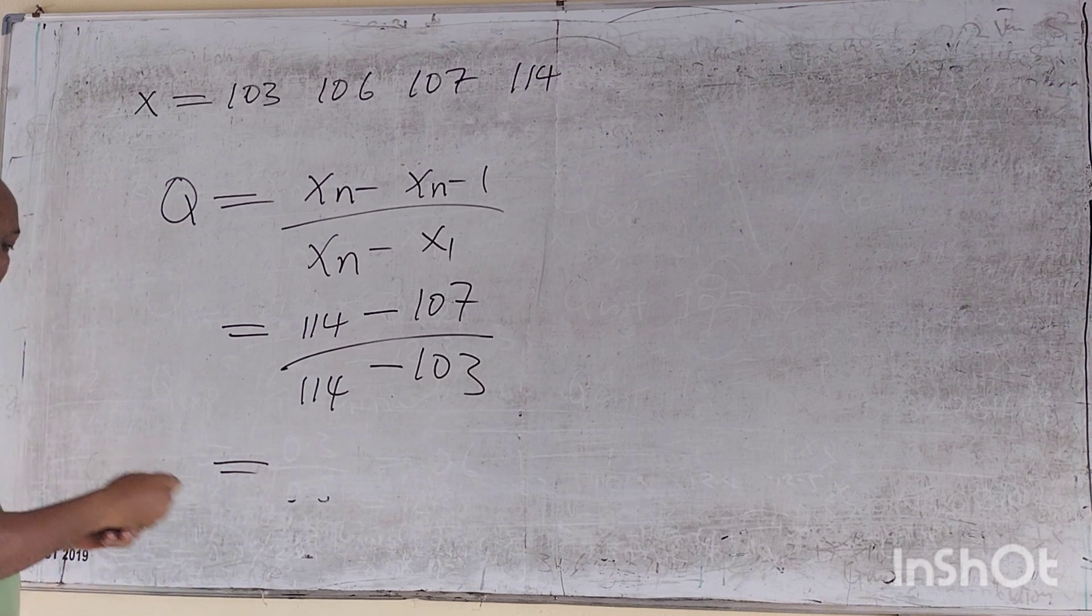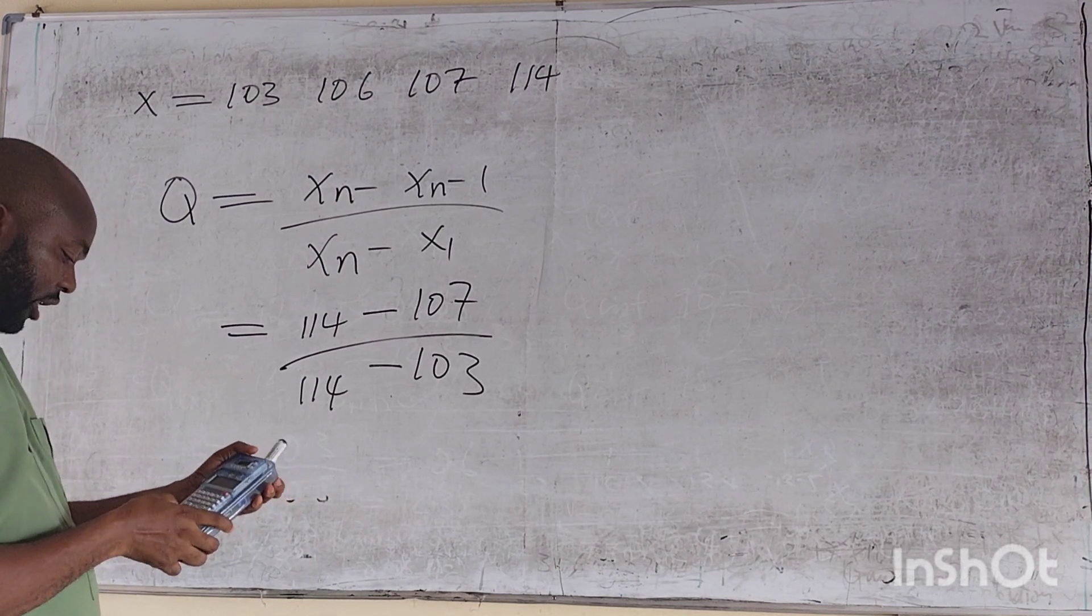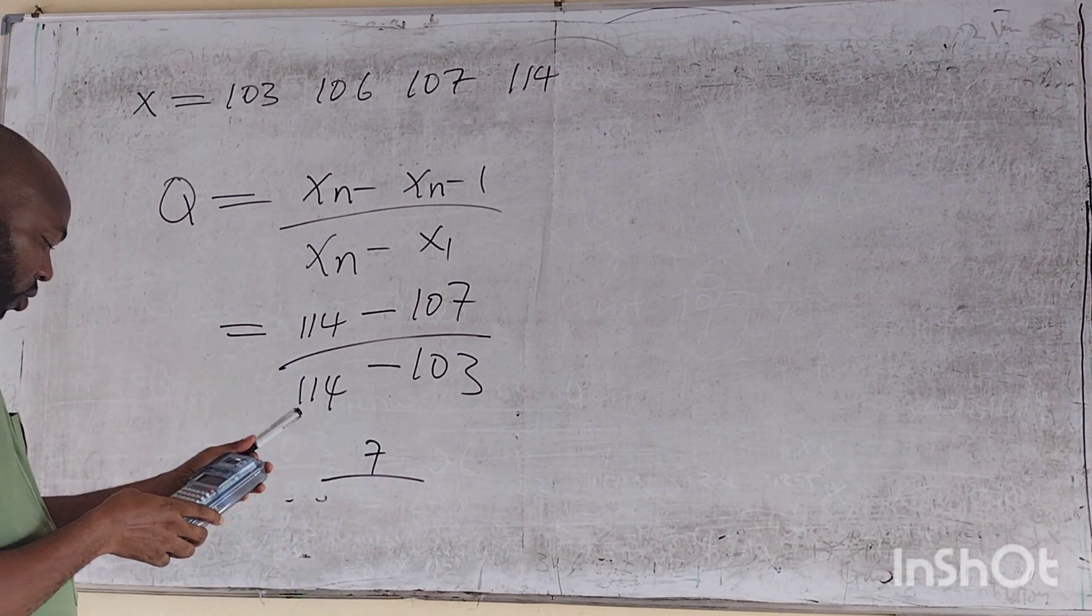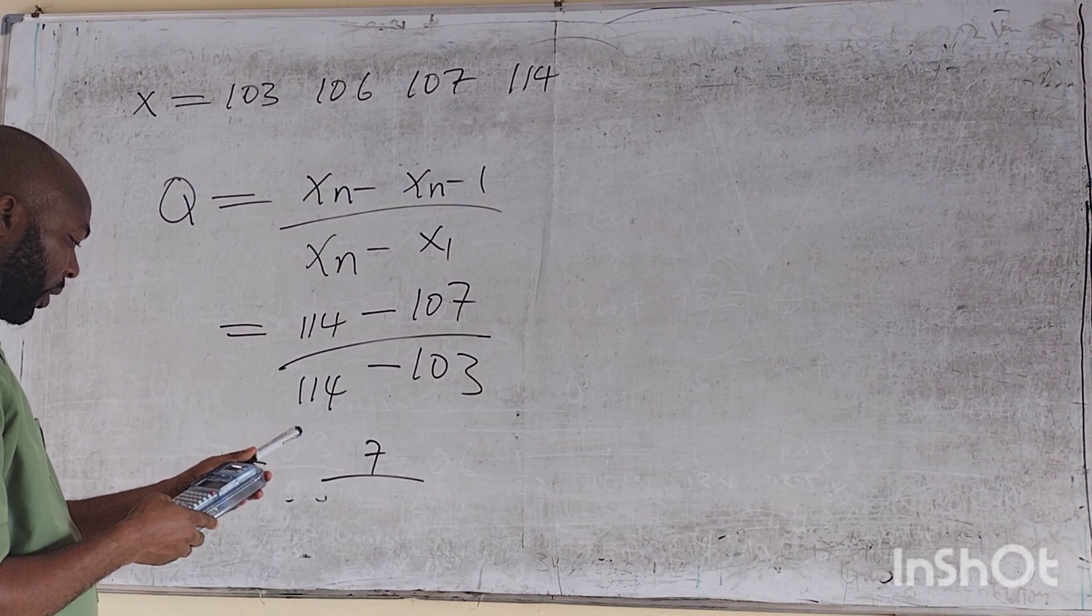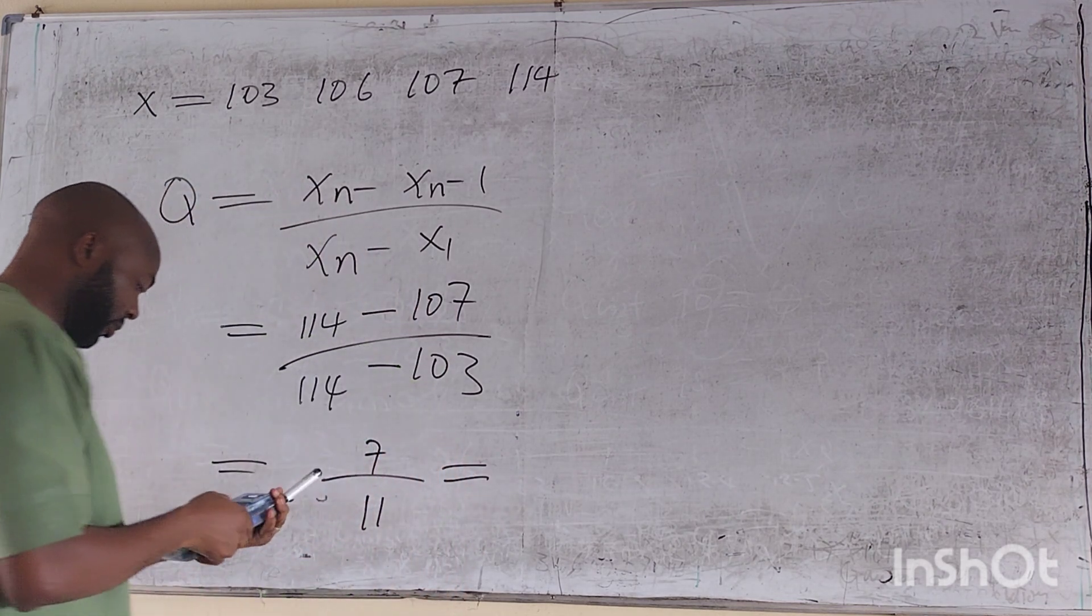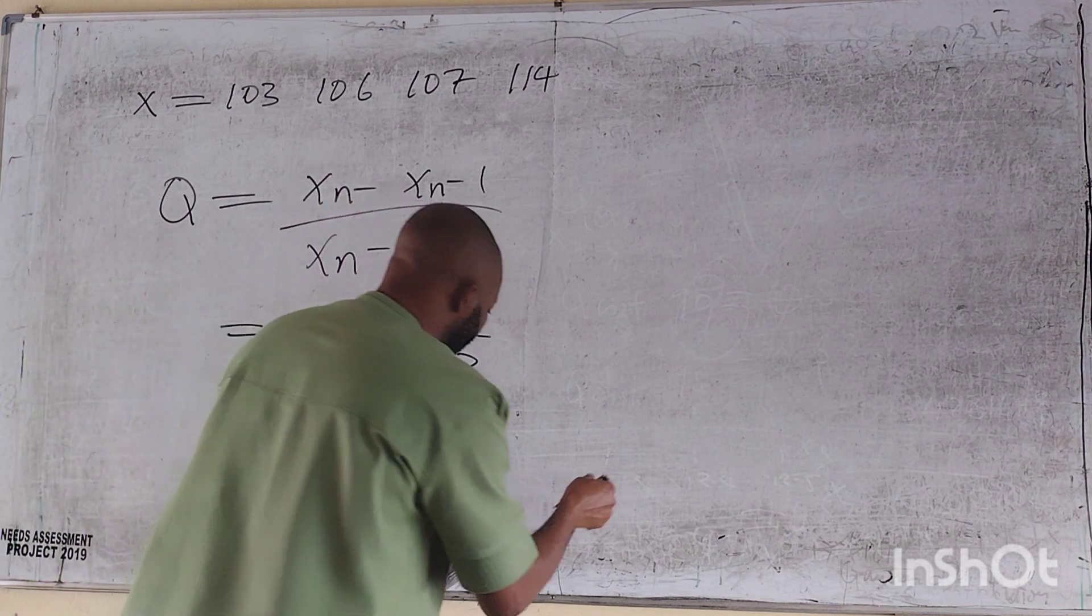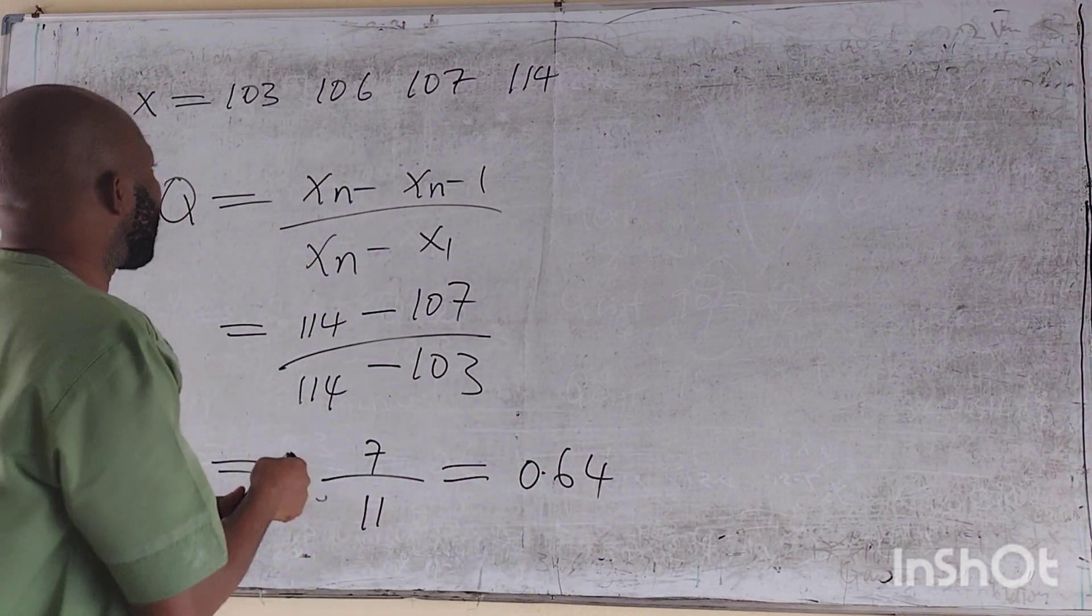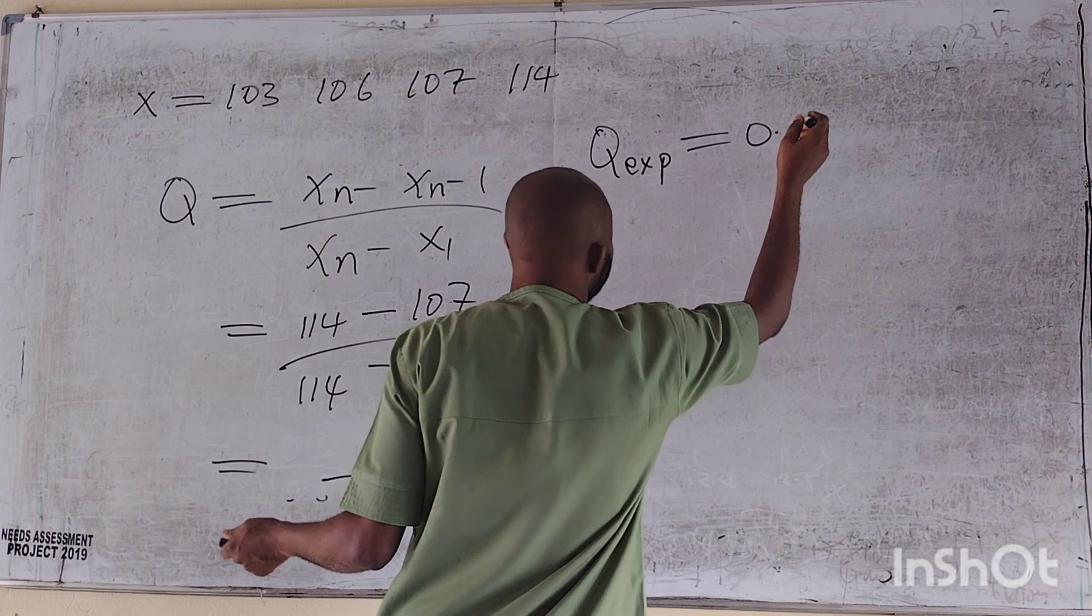We say 114 minus 107 over 114 minus 103. This is equal to 114 minus 107 is 7 over 114 minus 103, which is 11. And if our Q-experimental, let's call it Q-experimental is equal to 0.64.